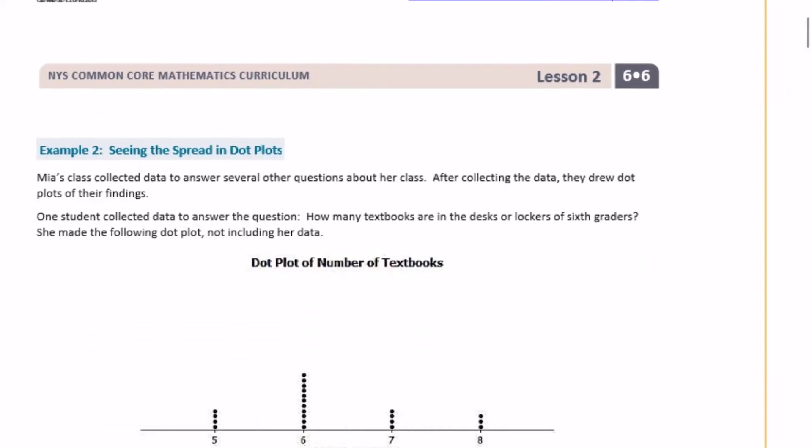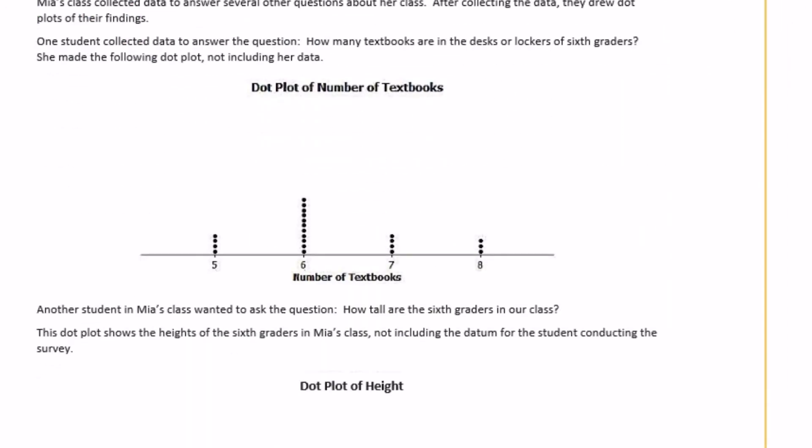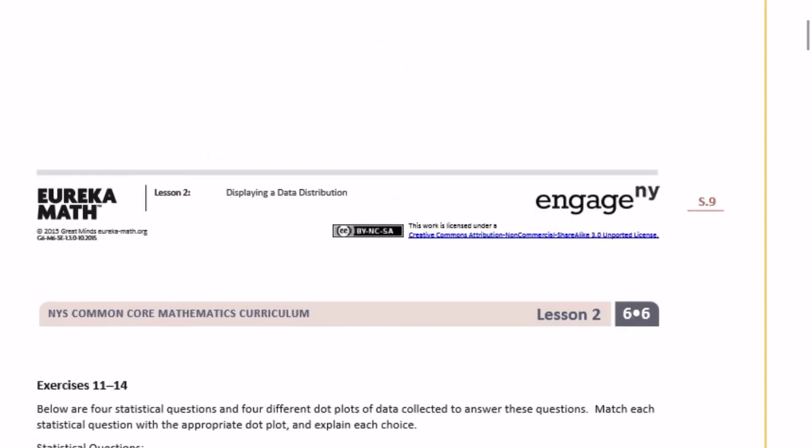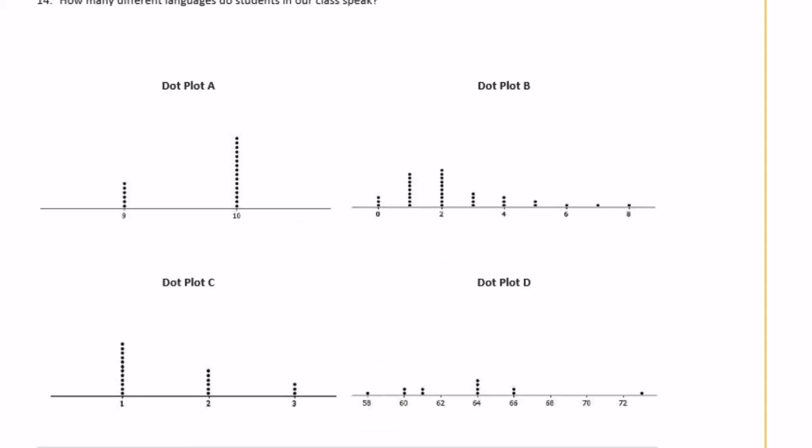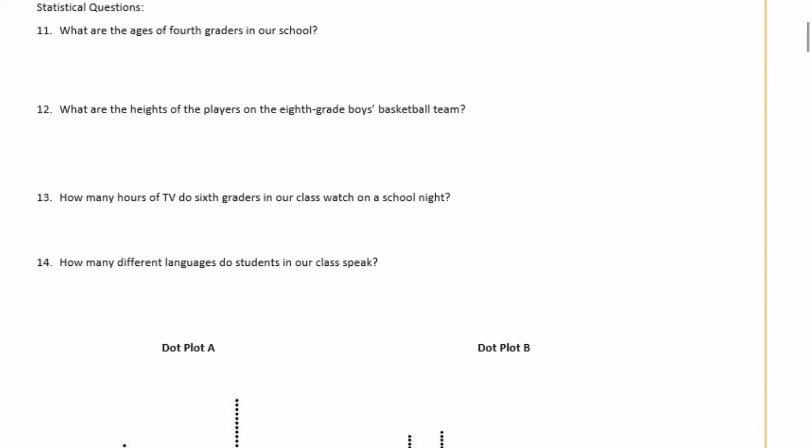All right. We're going to skip example two because it's just, there's really no questions, it's just a classroom discussion. So I'm going to go on to exercises 11 through 14. Below are four statistical questions and four different dot plots of data collected to answer these questions. Match each statistical question with the appropriate dot plot and explain each choice. So there's four dot plots down here, A through D, and we're matching them with 11 through 14.